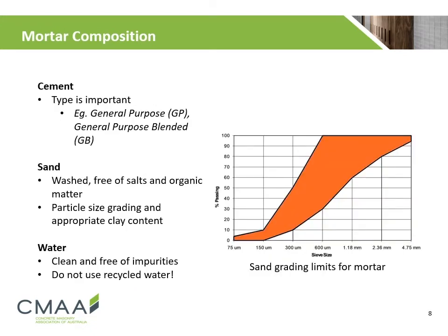It is important that the quality of the main mortar ingredients are met. The type of cement shall be carefully chosen as they contain different ingredients. The sand shall be washed, free of salts and organic matter. The presence of salts may cause efflorescence, a white powdery deposit that appears after the masonry wall is constructed. The sand shall also be suitably graded and not contain too much clay. The figure on the right shows a set of grading limits for the sand, however it shall be used as a guide only.